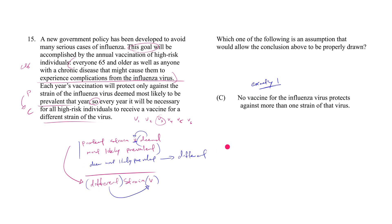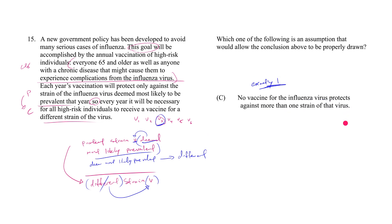It doesn't work because the scenario I described earlier could still be the case. Every single vaccine protects against exactly one strain — fine, let's say strain three is deemed most likely prevalent this year, so we give all high-risk individuals the vaccine for strain three. Next year, oh look, it's strain three again. You don't need a different strain. So even though the vaccine protects against exactly one strain, it's not sufficient. It doesn't address the critical issue of whether the designated strain must change year over year.